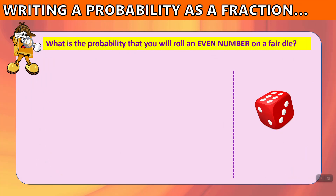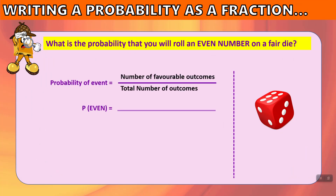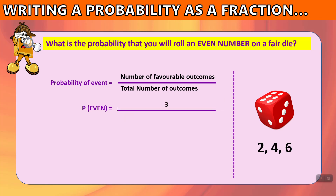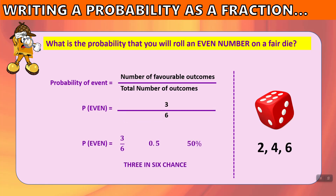What is the probability that you will roll an even number on a fair die? The even numbers are 2, 4, and 6 — that is 3 favorable outcomes out of 6 total faces. So the probability of getting an even number is 3 out of 6, or 0.5, or 50%. There's a 3 in 6 chance of rolling an even number.